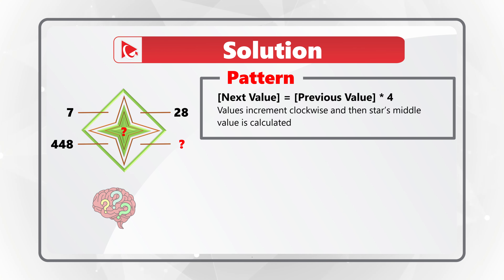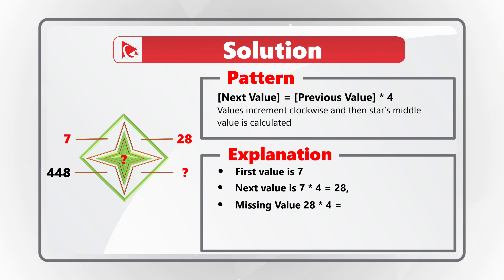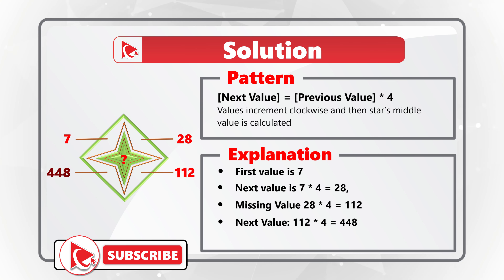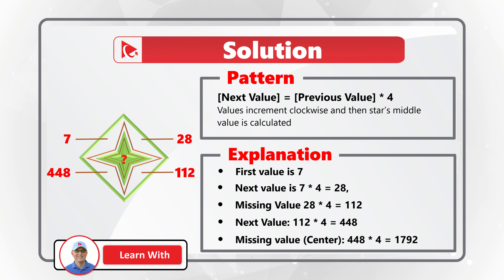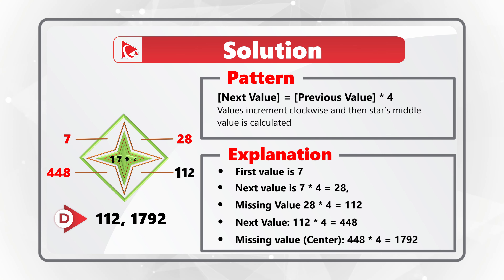Using the formula: 7 at 11 o'clock; 7 multiplied by 4 equals 28 at 1 o'clock; 28 multiplied by 4 equals 112 at 5 o'clock; 112 multiplied by 4 equals 448 at 8 o'clock; and 448 multiplied by 4 equals 1792 in the center. So the correct answer is Choice D: 112 and 1792.